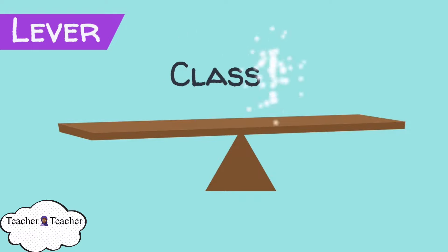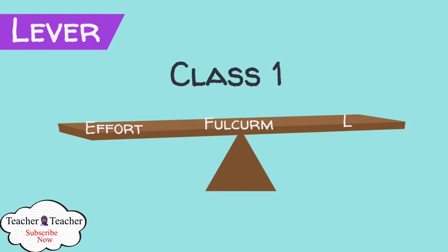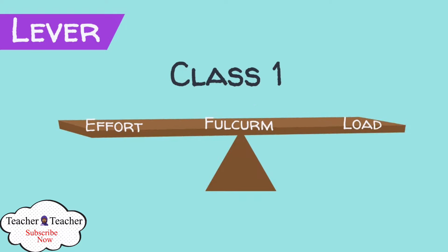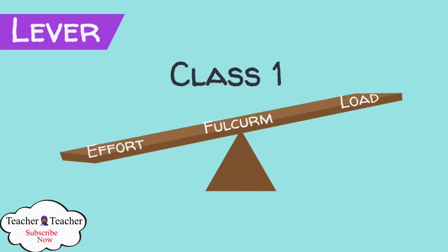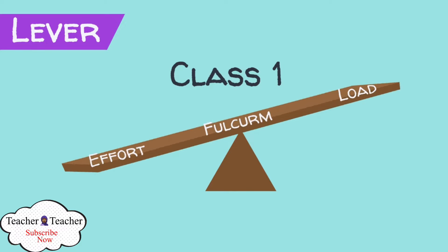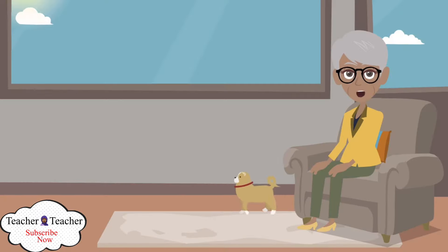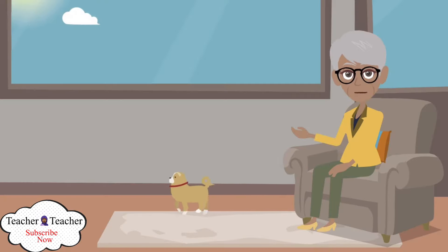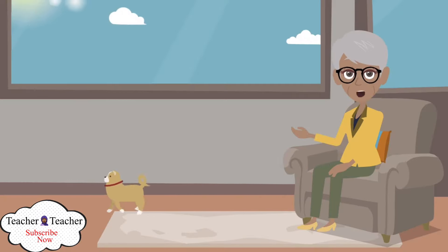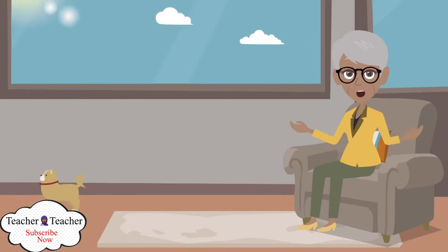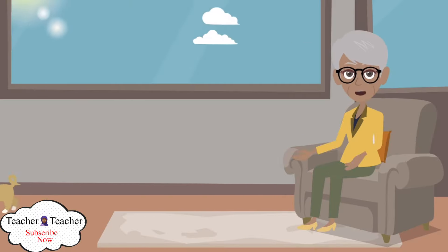The first class lever has the fulcrum in between the effort and the load. You push down on one end, and the other raises up. If the fulcrum is in the middle, the lever doesn't let you lift anything heavier than you could normally lift, so there is no mechanical advantage.